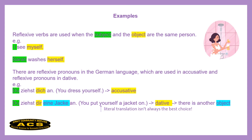But when you say 'Du ziehst dir eine Jacke an,' now there is another object — 'eine Jacke,' which is the direct object. So 'dir' is dative, the indirect object. You're taking the jacket — that's your direct object — and you put it on yourself. So you have to distinguish in the German language between accusative and dative reflexive pronouns: in this case 'dich' and 'dir.' They both refer back to yourself, but one is accusative and one is dative.